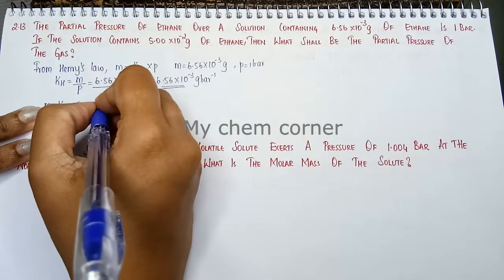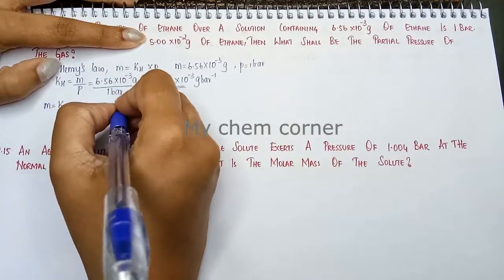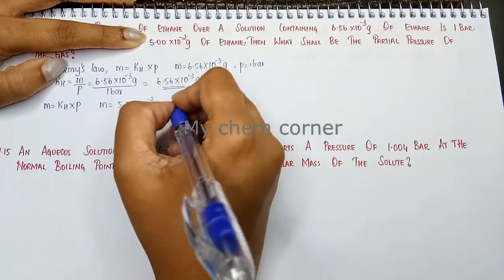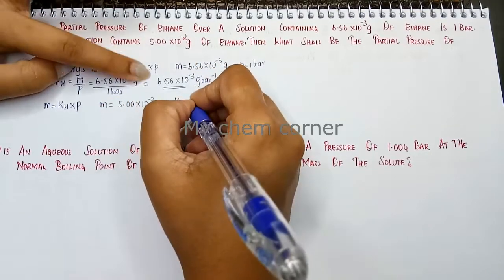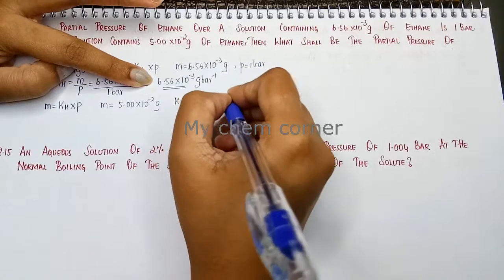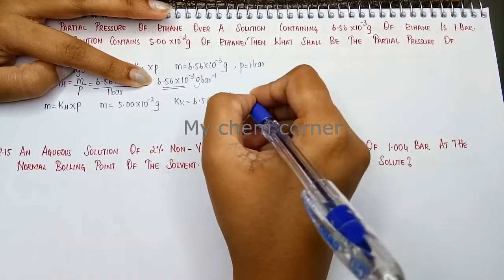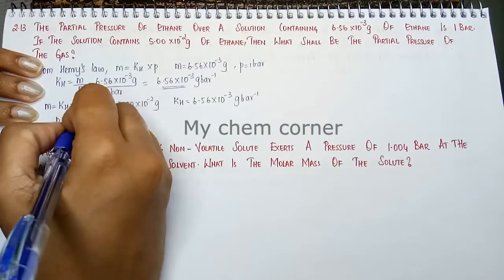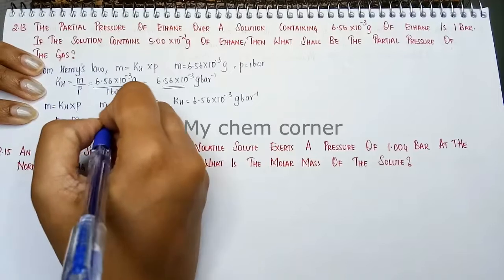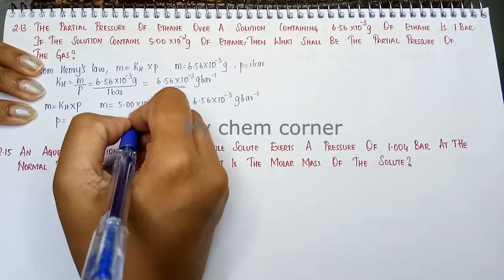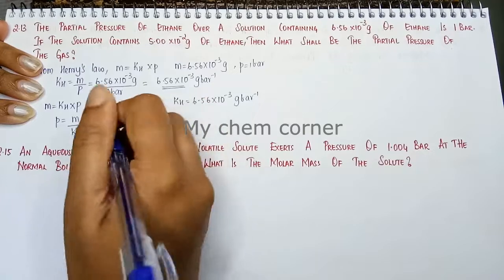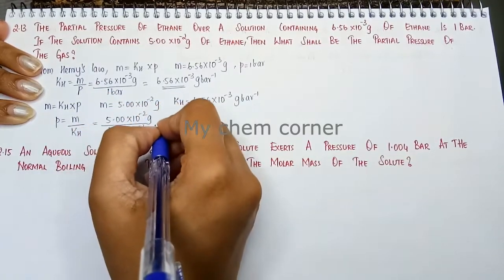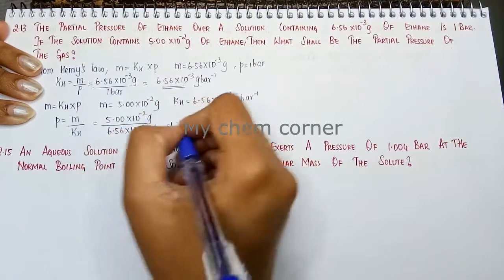In second case, mass is 5.00 × 10⁻² grams. KH we just calculated here, 6.56 × 10⁻³ gram per bar. Pressure we have to calculate. So pressure is equal to M by KH. M is 5.00 × 10⁻² grams by KH is 6.56 × 10⁻³ gram per bar. Gram and gram will get cancelled.